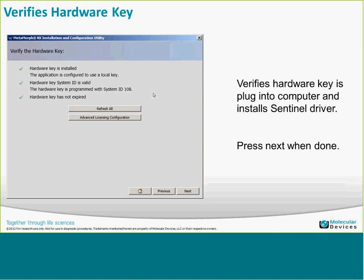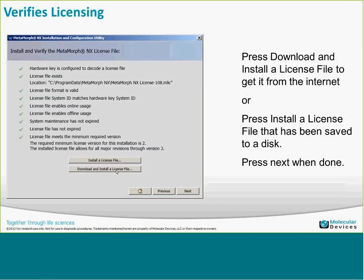Then we have the license file. There are two different ways to do this. The first is to install a license file you have on a thumb drive or hard drive — you navigate to the directory, and it copies the file into the appropriate folder. Additionally, if the system is connected to the internet, you can download and install a license file. Once downloaded, you'll get all the checkboxes and it tells you where the file is located.